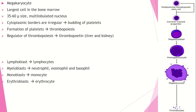Starting from the pluripotent hematopoietic stem cell, it forms the common myeloid progenitor, then megakaryoblast, promegakaryocyte, megakaryocyte, and finally platelets (thrombocytes). Platelets are formed by budding from the cytoplasm of megakaryocytes — the cytoplasm extends pseudopodia which fragment into platelets.